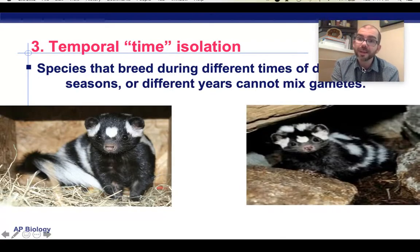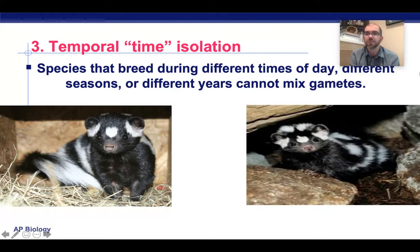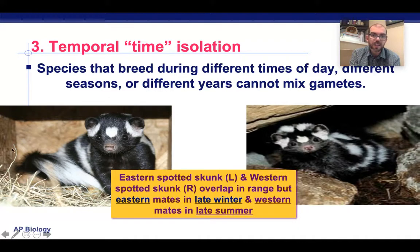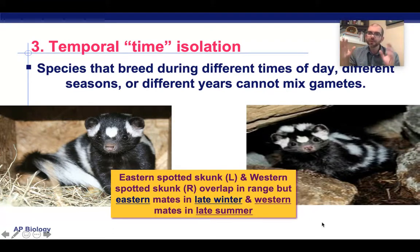There's also temporal isolation. For humans, we can reproduce year round on the menstrual cycle. But for many organisms, they're on the estral cycle where they can only reproduce for a small window throughout the year. For example, the eastern spotted skunk only reproduces in the late winter, while the western one only reproduces in the late summer. Since they reproduce at completely different times, that temporal difference is the barrier that prevents them from reproducing.